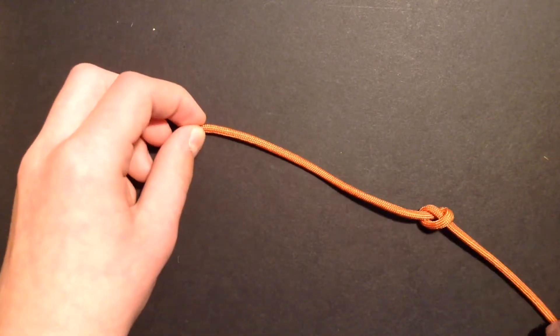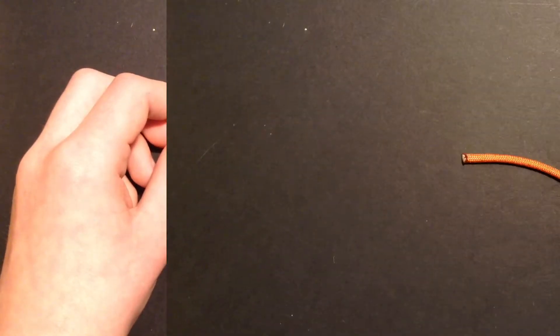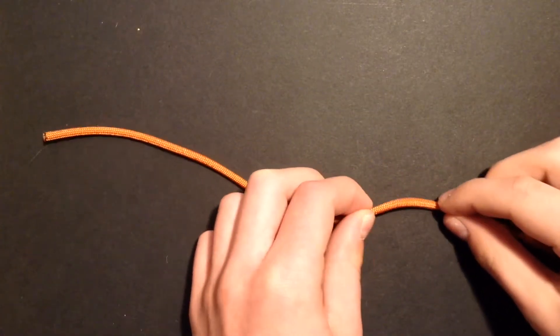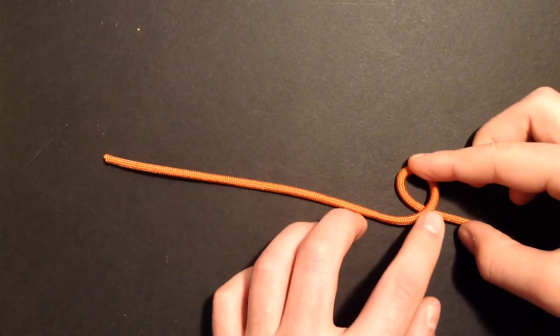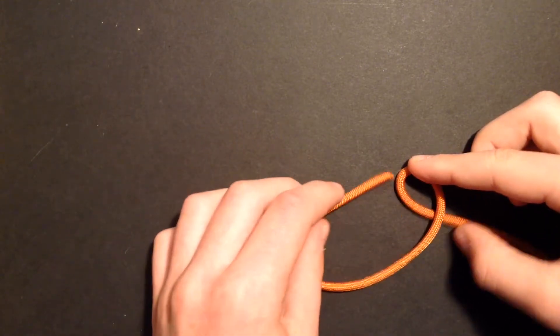The mistake that was made here was the direction of the loop. To correctly tie the bowline, you will want to make the standing end into a loop. It is very important that the running end is the side on top of the loop.